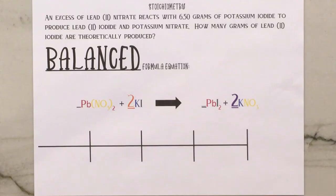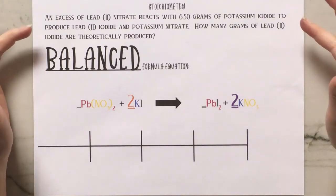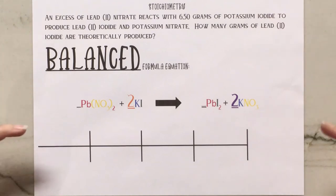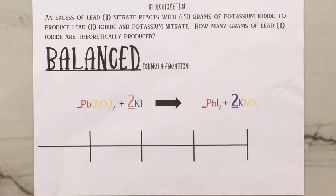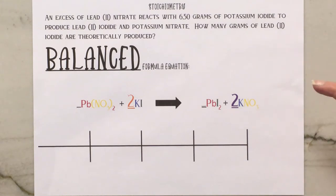So the stoichiometry example today — if you do not understand how I took this sentence equation and converted it into a balanced equation, there are two videos using the same equation here. You might want to take a look at those before you proceed to stoichiometry. You will discover that chemistry is an incredibly cumulative class, so if you do not understand how to do those two steps, this is going to be a very challenging problem.